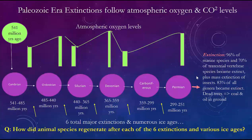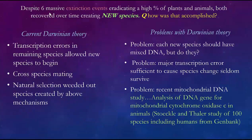After that major extinction we move on to the next eras, but the question is: how did it all recover? That is truly a miracle. We've talked about six massive extinction events eradicating a high percentage of plants and animals, yet each time they recovered — but with new species. The current Darwinian theory says the old species started to have transcription errors in their DNA — little errors, then bigger ones — and pretty soon you had a different plant or animal altogether.